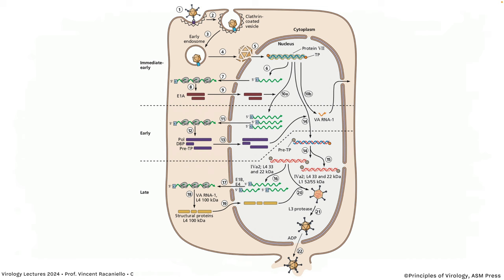The adenovirus genome map shows promoters on both strands: immediate early and early region promoters at the left end of the top strand (including E1A), a major late promoter on the top strand making lots of structural protein mRNAs, and the E2 early promoter on the bottom strand driving synthesis of DNA replication components — DNA binding protein, terminal protein, and the polymerase itself. Once the late promoter is anti-repressed after DNA synthesis, capsid protein mRNAs are made, structural proteins go into the nucleus, and new virus particles assemble.